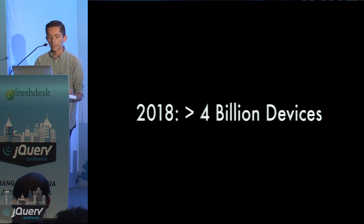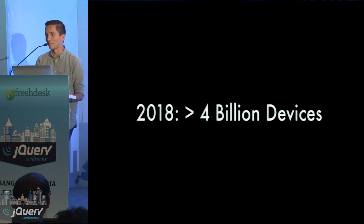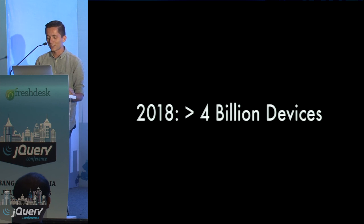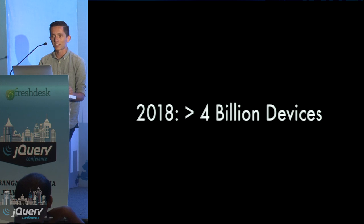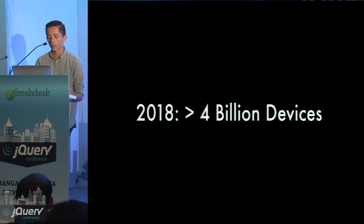By 2018, that number is going to grow to over 4 billion devices — that's more devices than there are people on this planet almost. But that includes watches, TVs, cars, tablets, consoles, phones. Your pants are probably going to run WebRTC. We're going to have stuff all around us that has the exact same experience as you'd get with Chrome on the desktop.